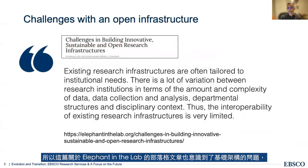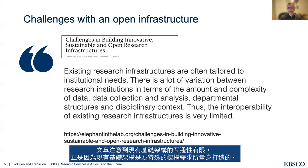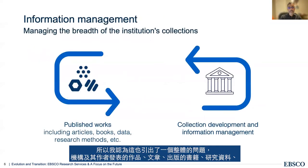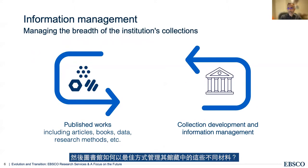An article on the Elephant in the Lab blog captures the issues with infrastructure as well, noting the limited interoperability of existing infrastructure precisely because existing infrastructures are tailored to very specific institutional needs. As a result, the ability to collect, preserve, and disseminate research data becomes difficult when data is dispersed across locations. This begs the question: institutions and their authors publish works — articles, books, data — so how can the library manage these different materials within their collections in the most optimal way?